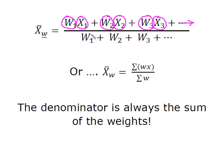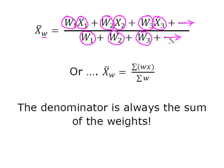In the denominator, we're going to use the weights — so the number of times we saw x1, plus the number of times that we saw x2, plus the number of times we saw x3. Just as we did in our numerator, we're going to continue that until we've accounted for everything that we have.